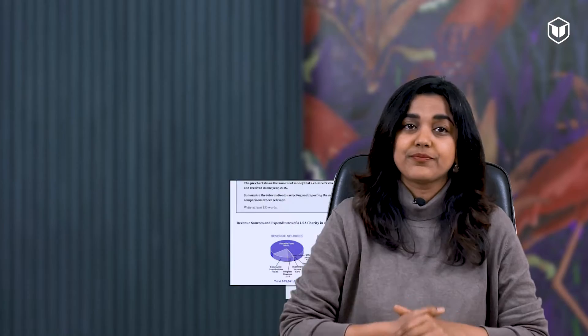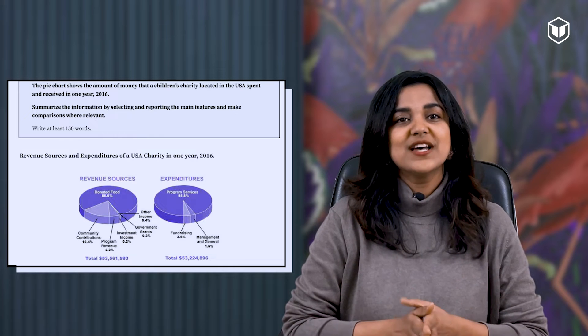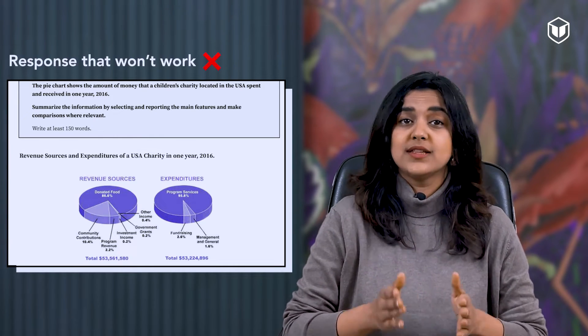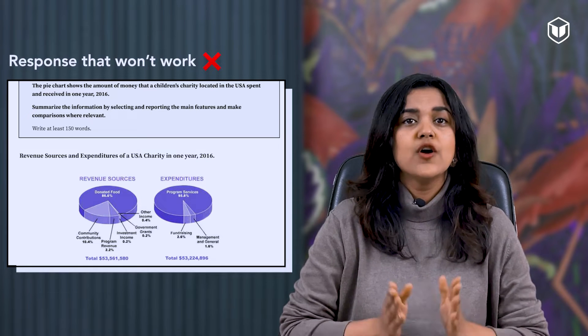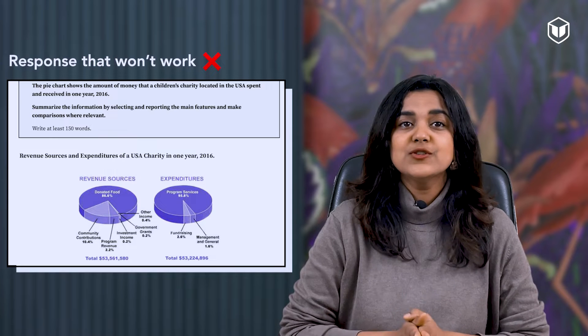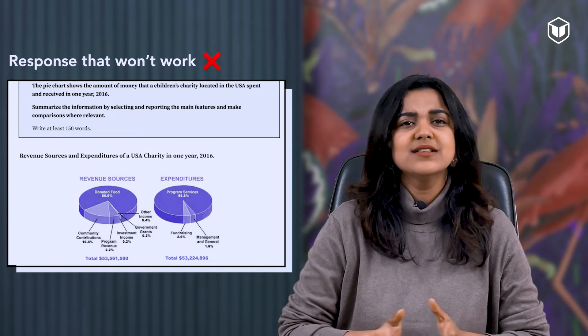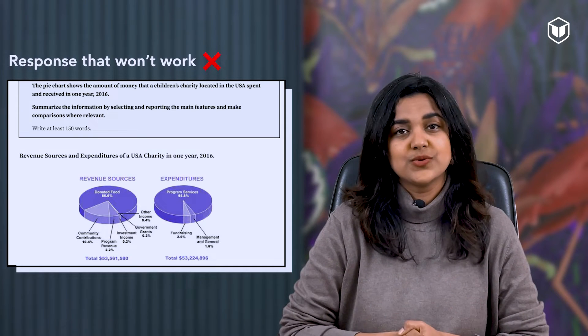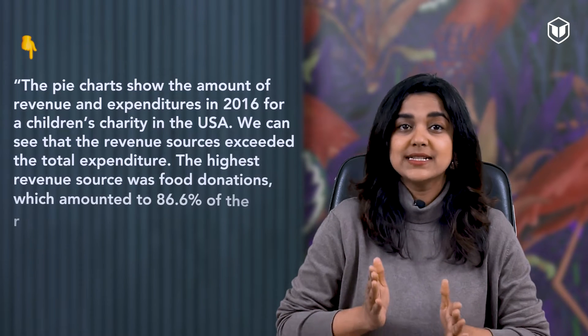The task is to summarize the data, not just report it. Let's look at this example: these pie charts show the amount of money a charity in the U.S. received and spent, and you have to summarize the information. Here's a response that won't work: 'The pie charts show the amount of revenue and expenditures in 2016 for a children's charity in the USA. The revenue sources were donated food 86.6 percent, community contribution 10.4 percent, and so on.' Here I am simply stating what the chart shows.